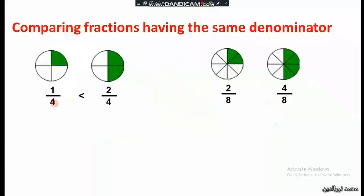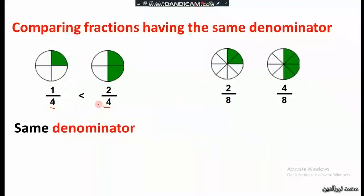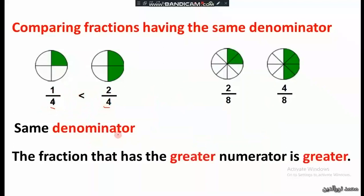For example, 1 over 4 and 2 over 4 have the same denominator. We look at the numerator: 2 is greater than 1, so 2 over 4 is greater than 1 over 4.